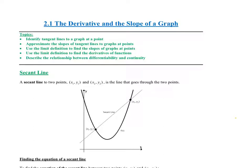Section 2.1 is on the derivative and the slope of a graph. In this section we're going to learn how to identify tangent lines to the graph at a point, approximate the slopes of tangent lines to the graphs at a point, use the limit definition to find the slopes of a graph at a point, and use the limit definition to find derivatives of functions. We're going to describe the relationship between differentiability and continuity.